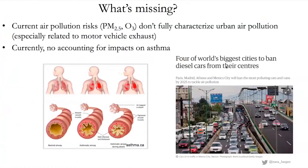The current air pollution risks in burden estimates are limited to particulate matter and ozone, which don't fully characterize urban air pollution — especially pollution related to motor vehicle exhaust, a prime source in cities around the world, particularly in high-income countries. The diseases currently linked to air pollution in the Global Burden of Disease include lung cancer, cardiovascular disease, lower respiratory illness, and COPD, but not asthma. Most people would assume asthma is a prime impact of air pollution, but this link is currently not accounted for in burden of disease assessments.